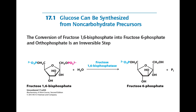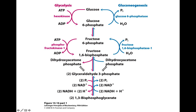The next step we need to overcome is going from fructose 1,6-bisphosphate to fructose 6-phosphate. This uses the enzyme fructose 1,6-bisphosphatase. This is another irreversible step in gluconeogenesis — we go from two phosphate groups down to one, releasing an inorganic phosphate in the process. It is a one-step reaction.